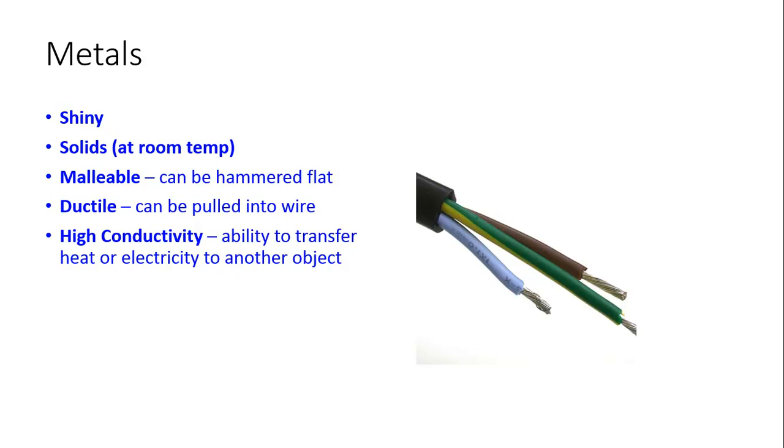As a review, metals are shiny, solid at room temperature. Two words that are not in your textbook but I want you to know are malleable, which can be hammered flat. They take the shape, you can mold them into different shapes. Another word is ductile, which means it can be pulled into wire. And also, metals have high conductivity, which is the ability to transfer heat or electricity to another object. And that's why we make wire out of metals, because they can conduct electricity very well.